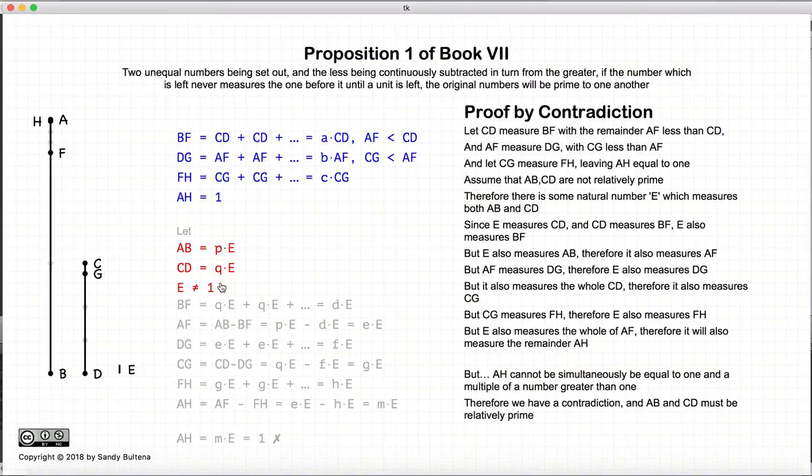So if this is not true, then this can never happen, and therefore there is no number E that is greater than 1 that measures AB and CD, and that is the definition of relatively prime.